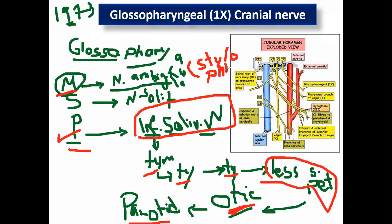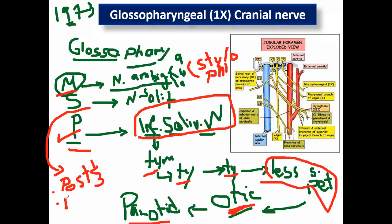The rest of the glossopharyngeal is sensory. Sensory to what? The glosso part supplies the posterior one-third of the tongue. The anterior two-thirds are lingual and chorda tympani. The posterior one-third — taste and general sensation — is glossopharyngeal. The pharyngeal part supplies the pharynx sensory, and also the tonsillar branch supplies the palatine tonsil and all the nasopharynx.